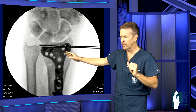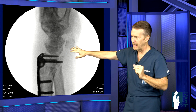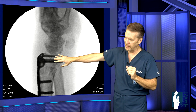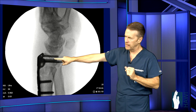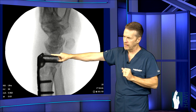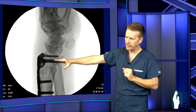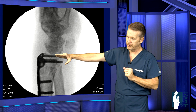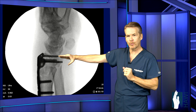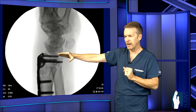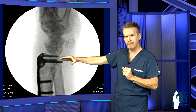Now let's look at this patient after the pins have been removed. You can see the plate is on the back side of the wrist, and that restoration of the tilt of the distal radius is now towards the palm.